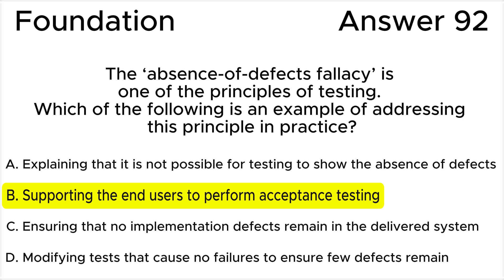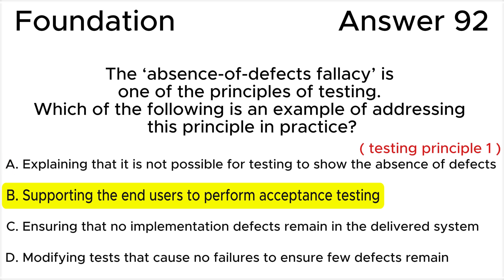All the rest of the answers are wrong. Answer A is invalid because the 'testing shows the presence not the absence of defects' principle explains that while testing can detect the existence of defects in the test object, it is not possible to demonstrate that there are no defects and therefore guarantee its correctness. Therefore, explaining that it is not possible for testing to show the absence of defects would address that principle, not the absence of defect fallacy.